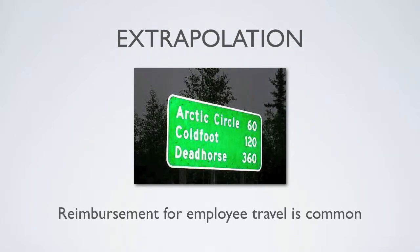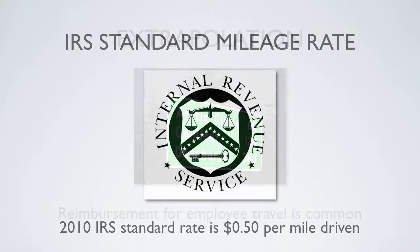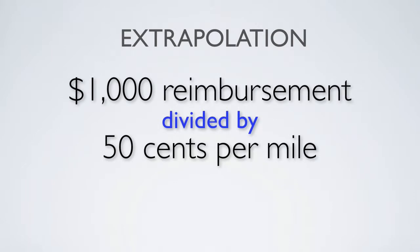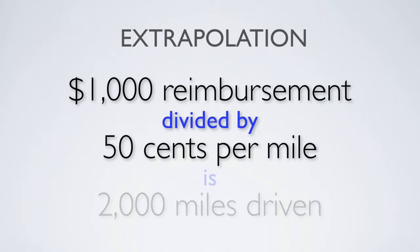We'll briefly discuss how financial streams can be used to extrapolate greenhouse gas information from employee travel. Companies typically reimburse their employees on a per-mile basis for work-related travel, and the IRS's standard mileage rate for 2010 is 50 cents per mile driven. With this information, we can extrapolate that if a company reimbursed an employee $1,000 for travel, then he or she drove 2,000 miles.